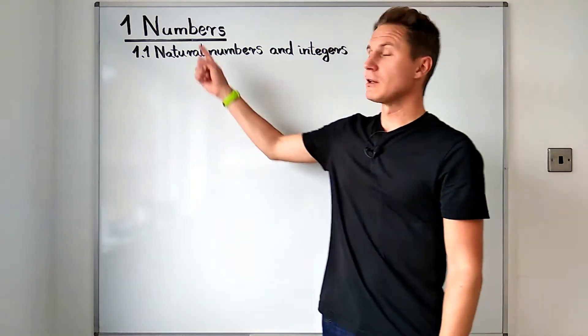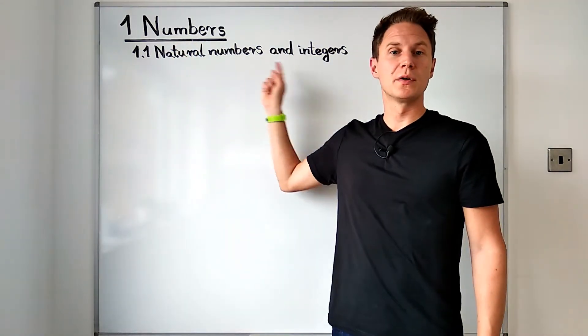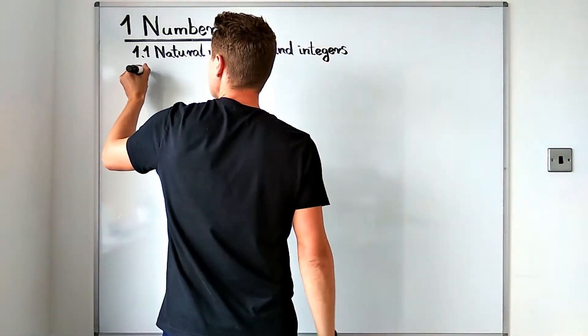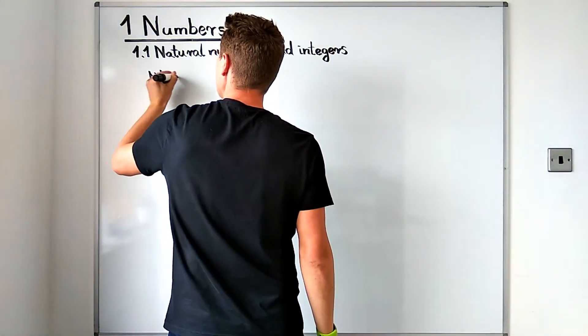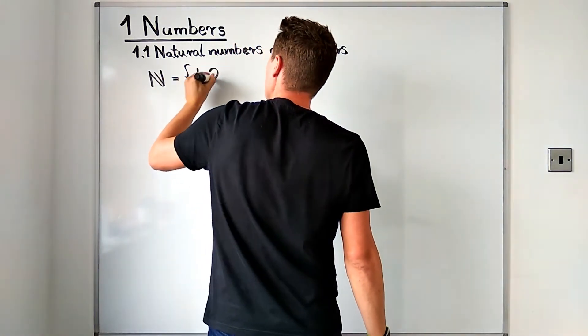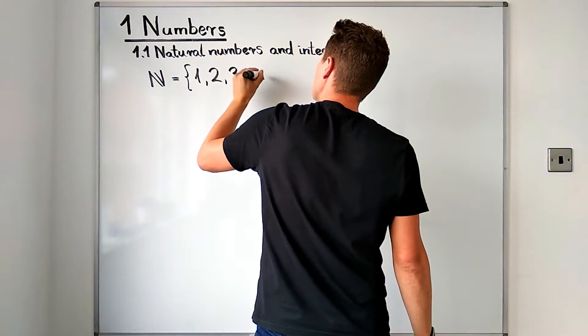Let's start by considering numbers and in particular natural numbers and integers. Let me remind you that the set of natural numbers is denoted by N and contains the counting numbers 1, 2, 3 and so on.